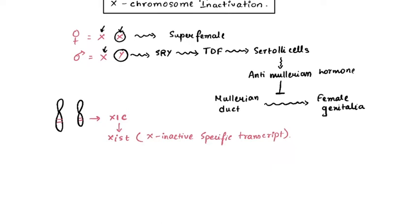So this X inactive specific transcript, as the name suggests, inactivates the X chromosome. Now it is a chance factor that one of the X chromosomes would secrete more XIST and one will secrete less XIST. Now when that happens, the chromosome that is secreting more XIST, that X chromosome is going to be inhibited or suppressed by its own XIST expression.